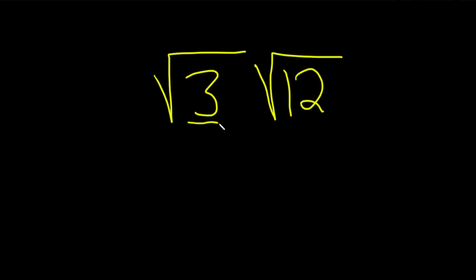So if we take the 3 and we multiply it by the 12, we're going to get 36. So this is the square root of 36. And then we just have to find the square root of 36.